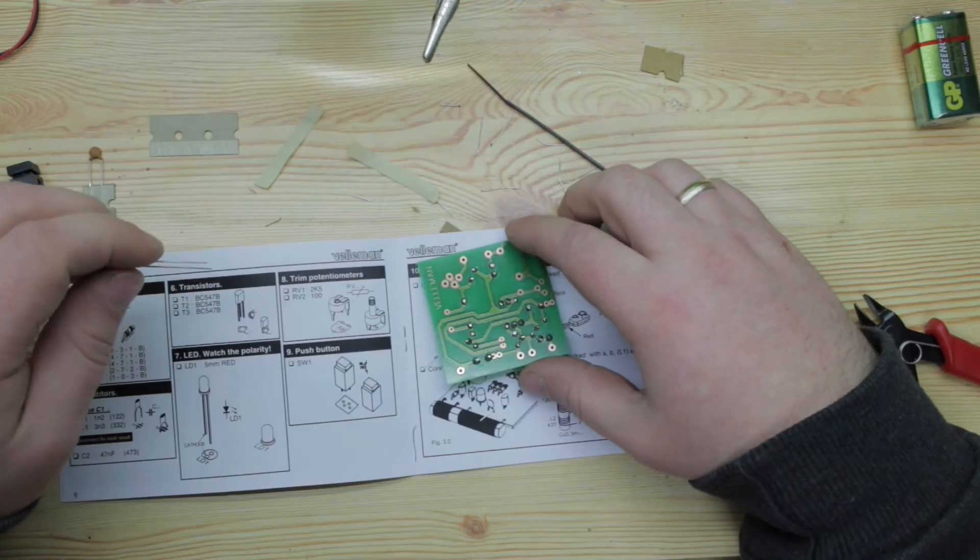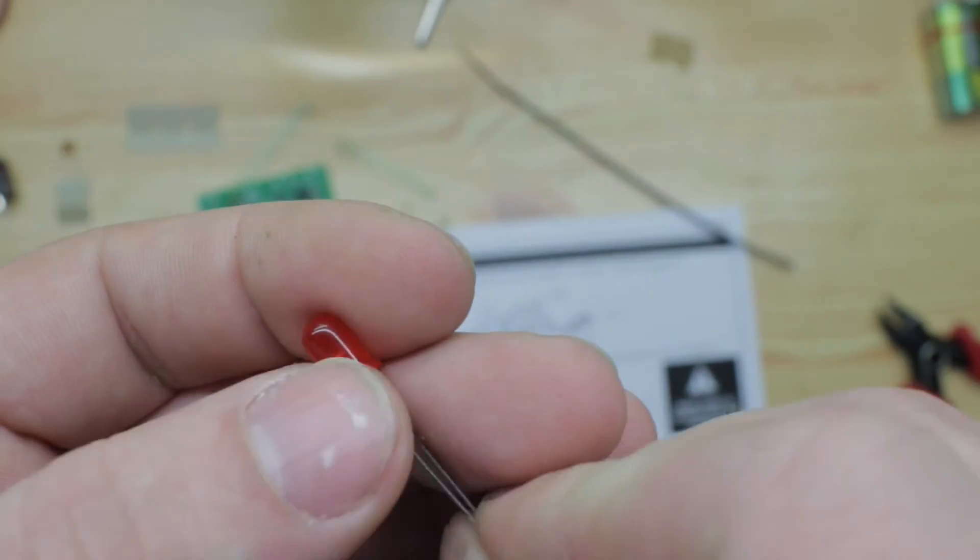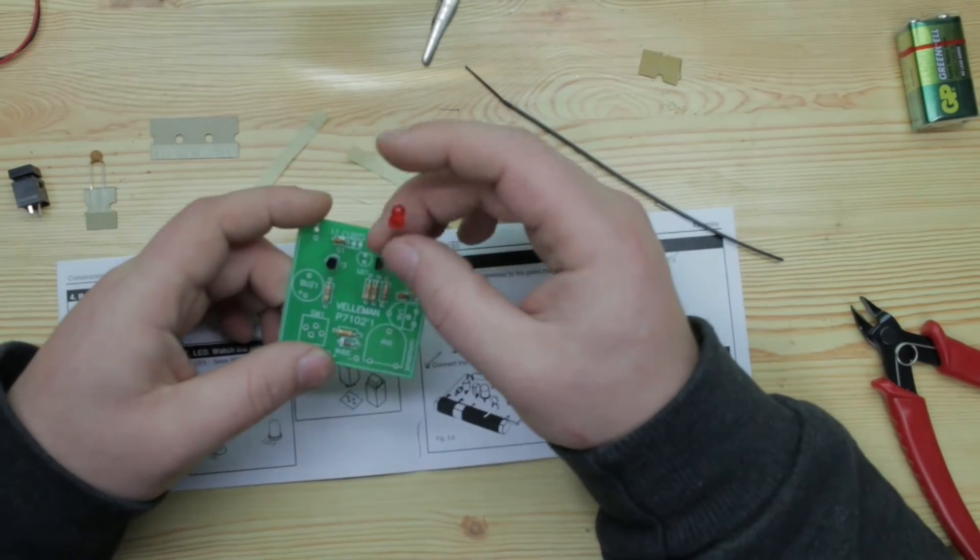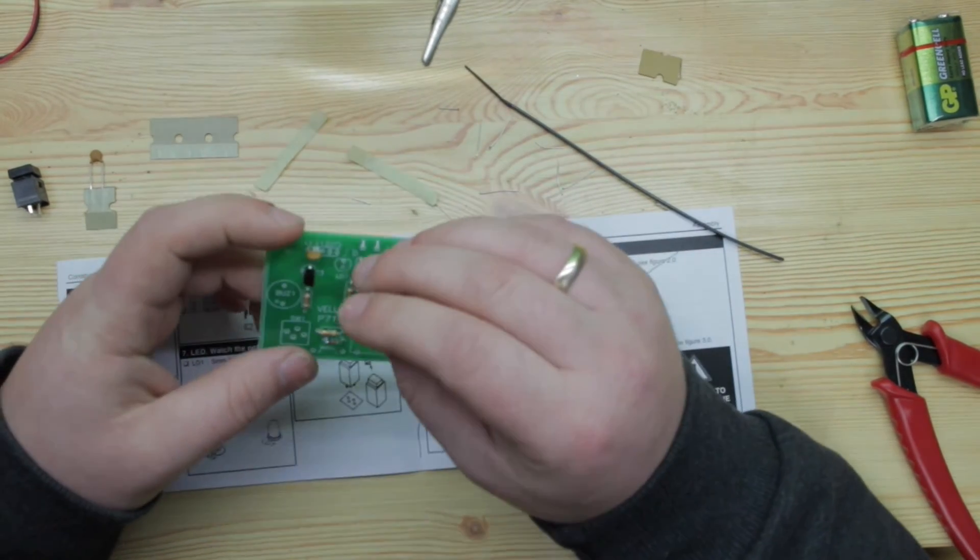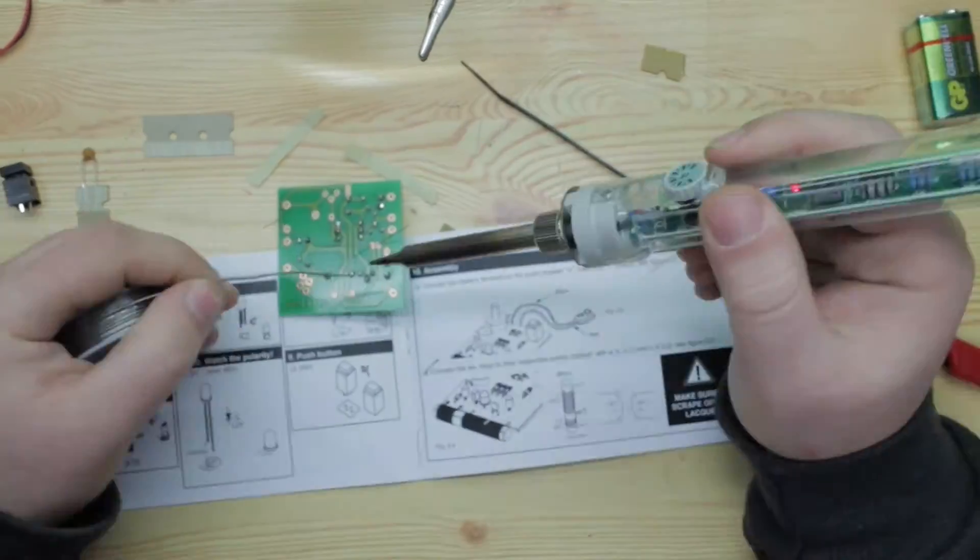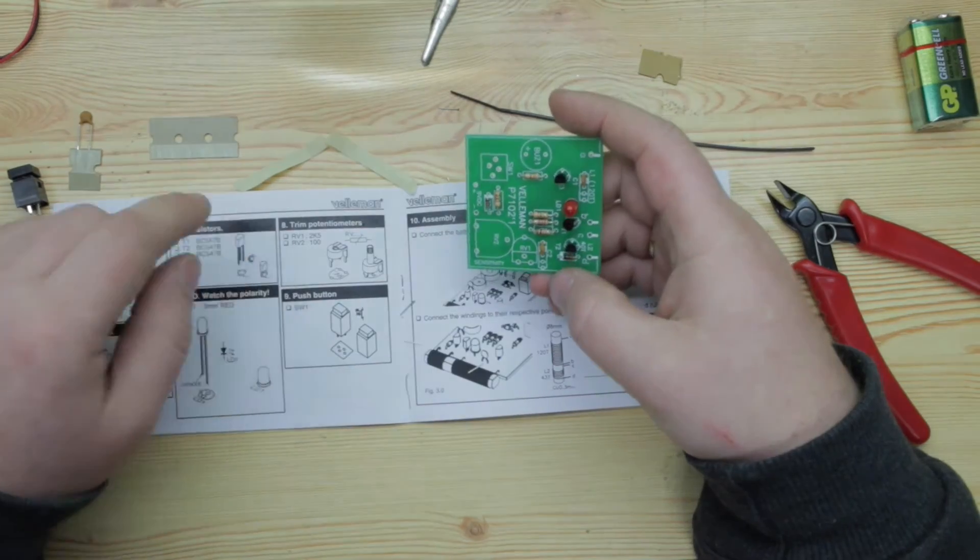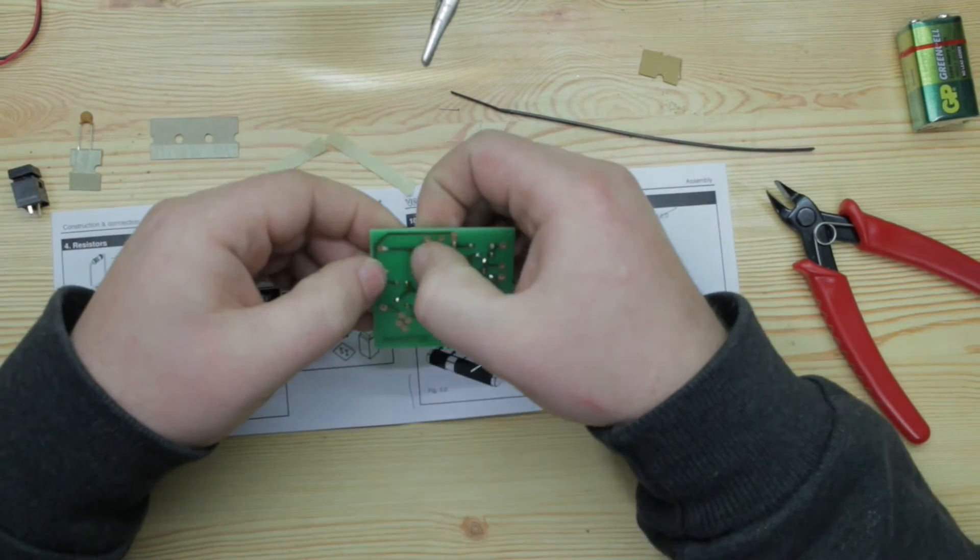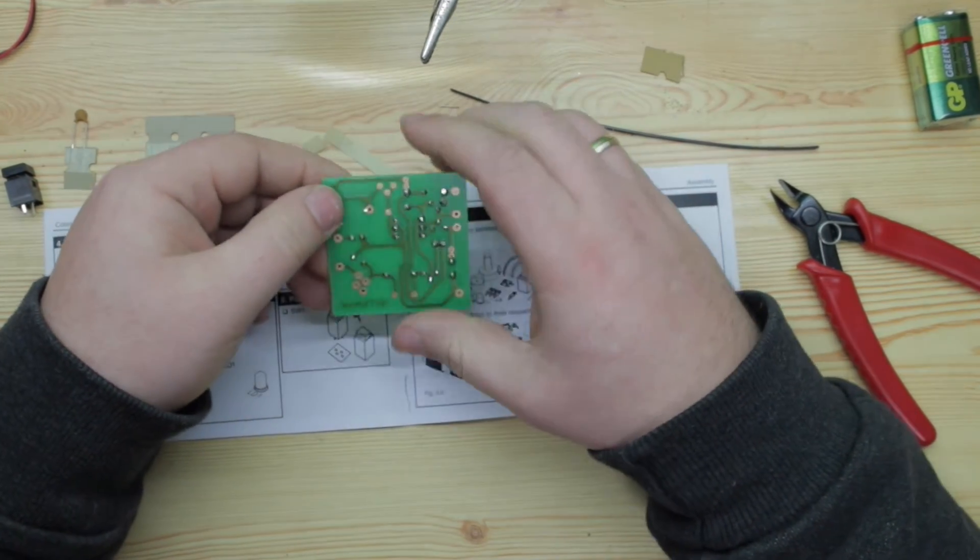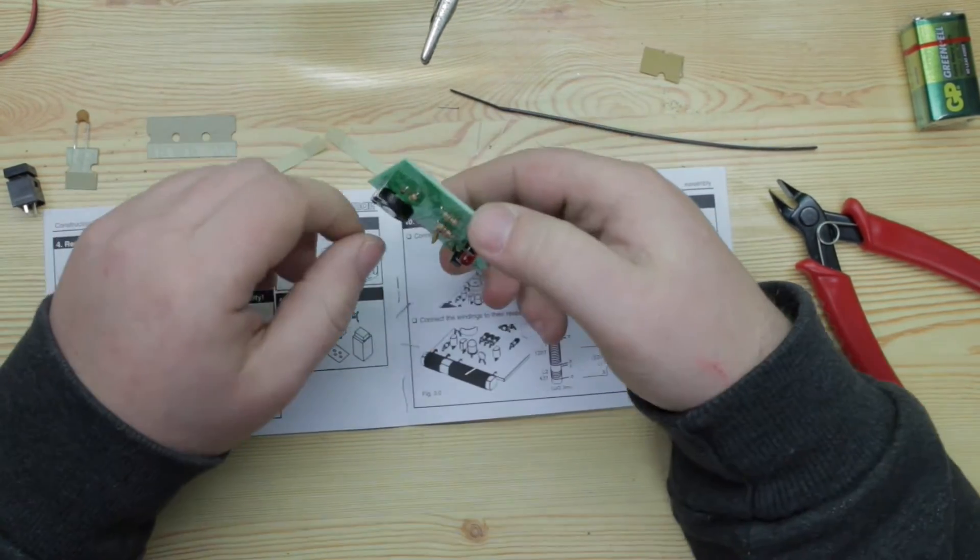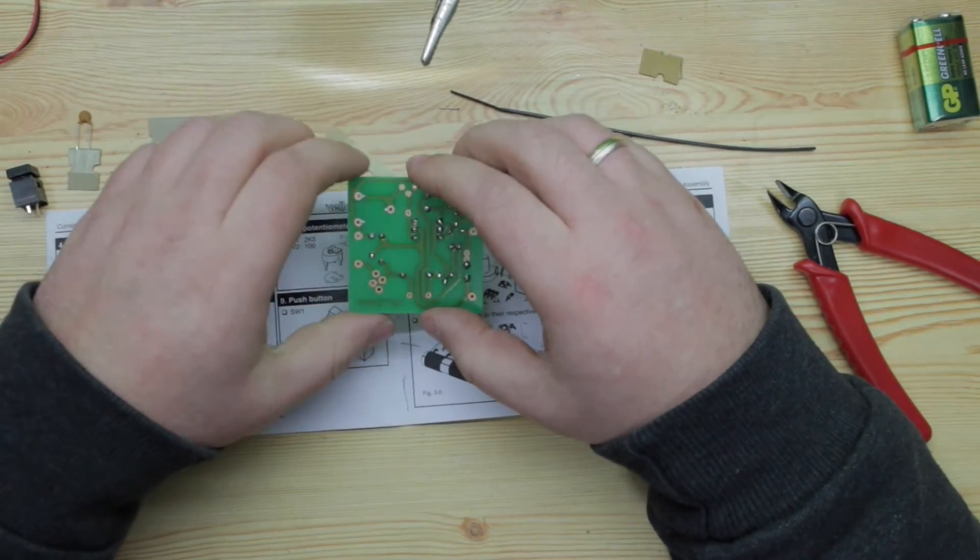Now it's time for the LED. One side of LED has a flat spot. That flat spot should go correspondingly on the flat side on the PCB as well. All the potentiometers. Try to get it as tight as possible so it would relieve any stress when you're turning the knobs.